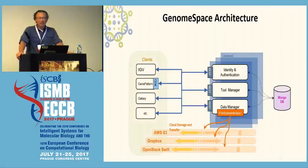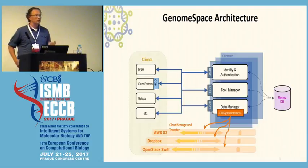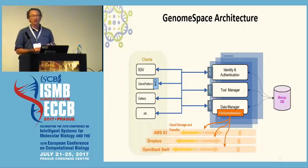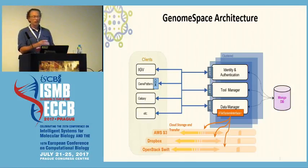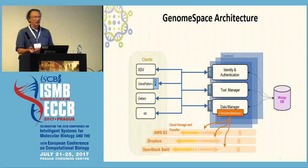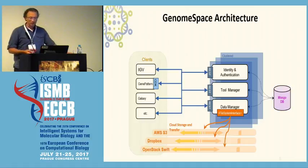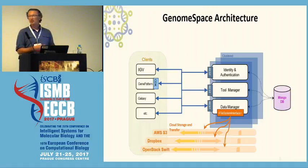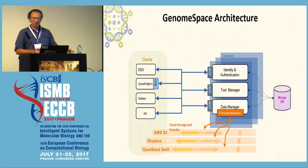The GenomeSpace architecture looks basically like this: we've got a couple of servers for managing user identities, managing tools, and managing data, but we don't do much in the way of managing data itself. The way we're integrating cloud storage providers is that anytime one of the tools requests a file, it goes to GenomeSpace, the user gets authenticated, and then we generate a one-time use URL out to the actual storage provider. So when you're trying to get a file from us that's on S3, you'll actually retrieve it from S3 — the file lives on S3. This means the actions are lightweight and downloads and uploads happen very quickly because you're not actually going through us and causing a constriction to the pipe.